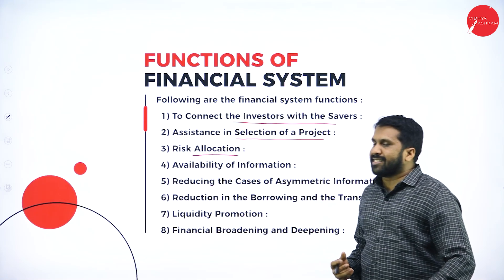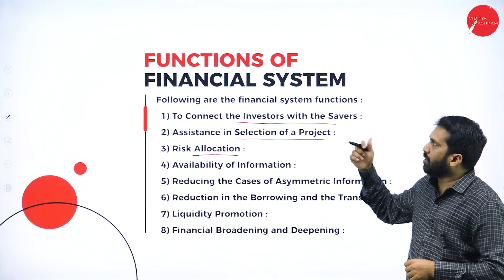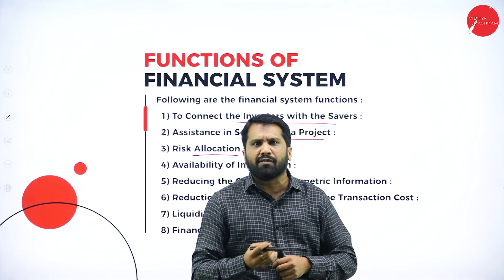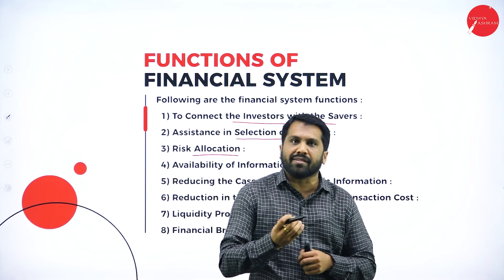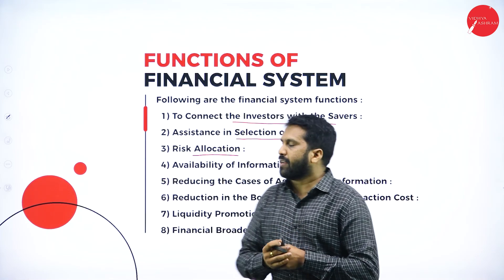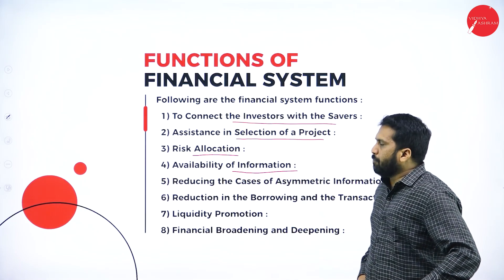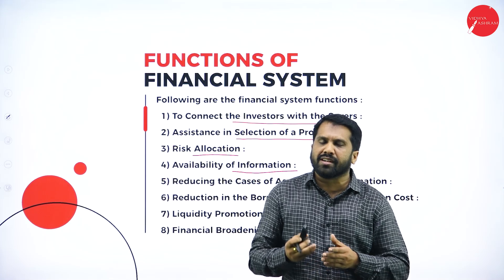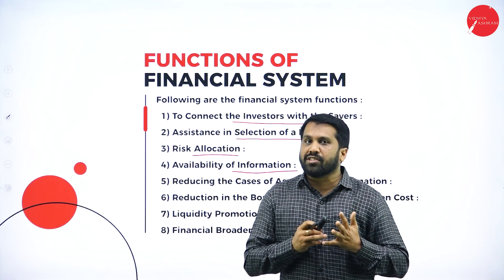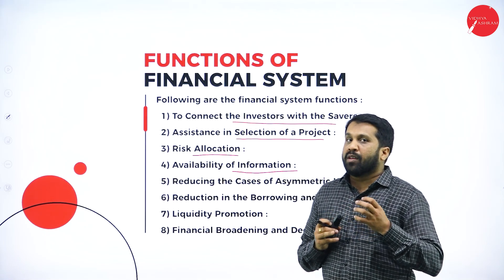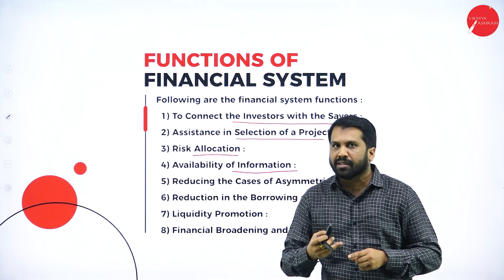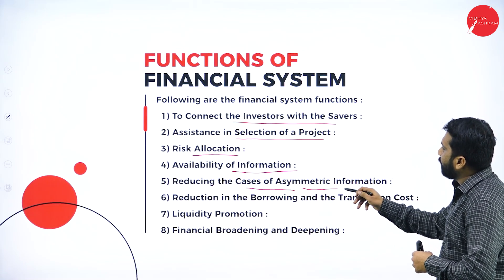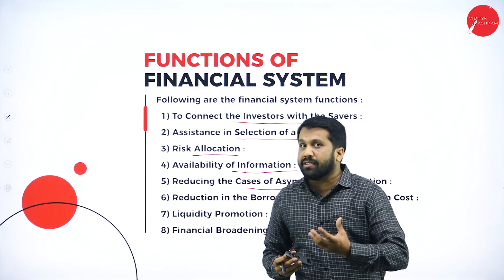Third function: risk allocation. If you have a financial system or financial services, they will allocate your risk. There is a portfolio manager whose job is to decide what risk you are supposed to take with your finances. Fourth: availability of information — if you want to buy shares or deposit in a bank, the manager or officer will give you all information about deposit rates, interest rates, and returns after 8, 10, or 15 years, including all documentation.